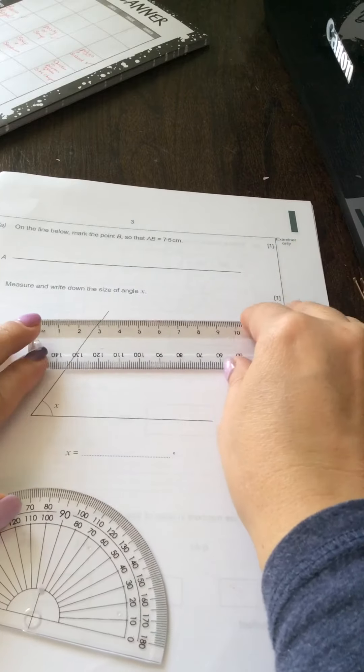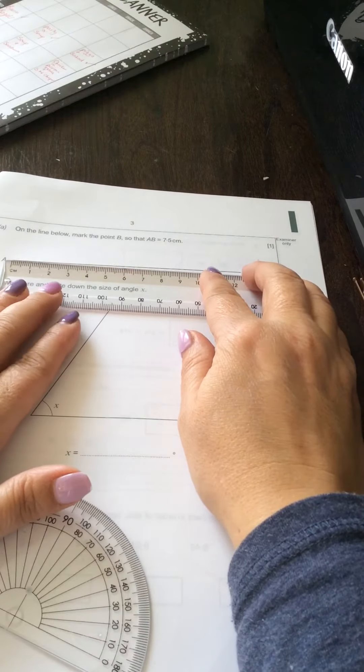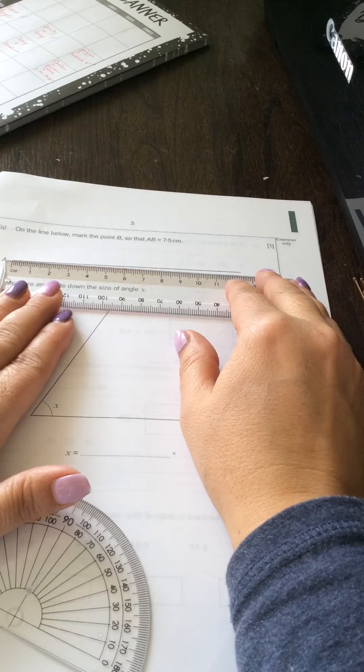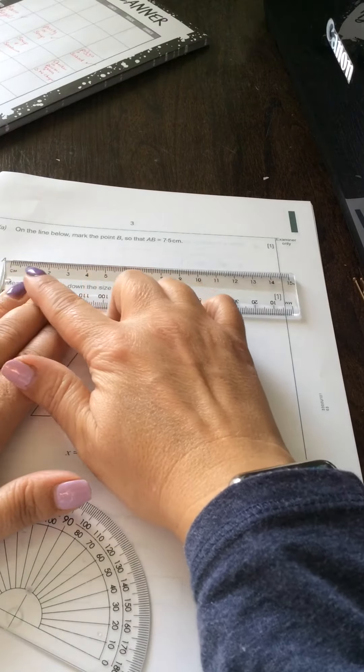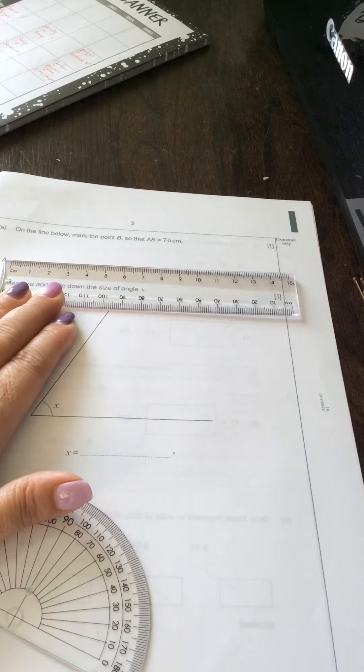Place it on the edge of the line at A. Make sure centimeters is there. You're going to go across.